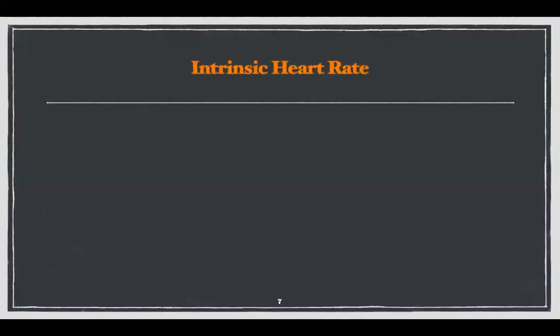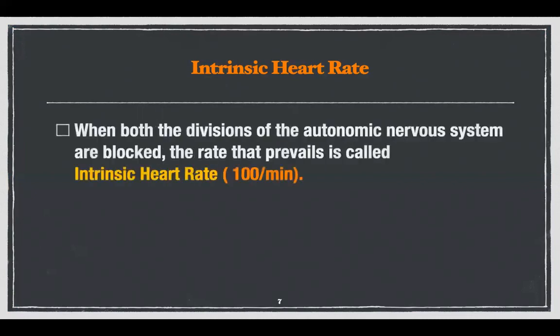What is intrinsic heart rate? When both the divisions of the autonomic nervous system are blocked, the heart rate that prevails is called the intrinsic heart rate. This can be done only experimentally, and the heart rate is then about 100 per minute, suggesting that the vagus has a more dominant role than the sympathetic in the regulation of heart rate.